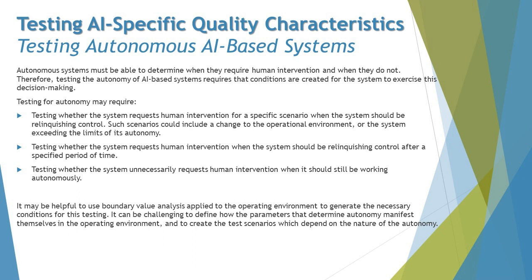Testing for autonomy requires the following. First, testing whether the system requests human intervention for a specific scenario when it should be relinquishing control. Such scenarios could include a change to the operational environment, or the system exceeding the limits of its autonomy, at which point it should request human intervention.